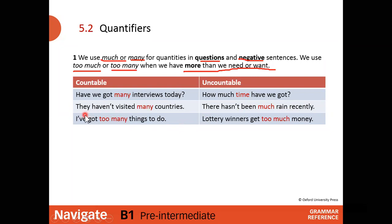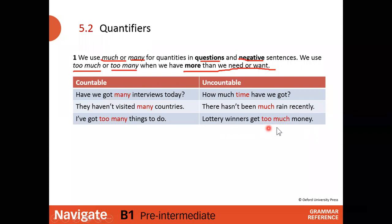'They haven't visited many countries' — 'many' before 'countries,' a countable plural noun, in a negative sentence. 'There hasn't been much rain recently' — 'much' before 'rain,' an uncountable noun, in a negative sentence. 'I've got too many things to do' — complaining about excess. 'Lottery winners get too much money' — 'too much' before 'money,' an uncountable noun.